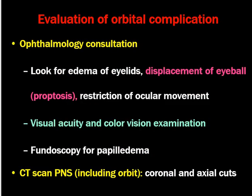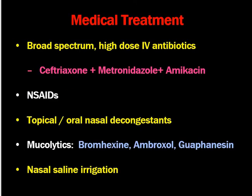To evaluate orbital complications, an ophthalmology consultation should be sought. Look for eyelid edema, displacement of the eyeball, proptosis, and restriction of ocular movement. Check visual acuity, color vision, and fundoscopy for papilledema. CT scan of the paranasal sinuses including the orbit in axial and coronal courses is important to determine site and extent of disease. Medical treatment is by broad-spectrum IV antibiotics at high doses — ceftriaxone, metronidazole plus amikacin — to control gram-positive, gram-negative, and anaerobic infections. Nasal decongestants, mucolytics like bromhexine, ambroxol, and guaifenesin, and nasal saline irrigation are also given.